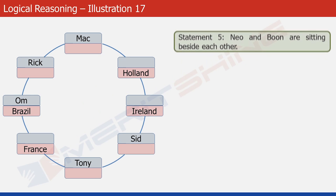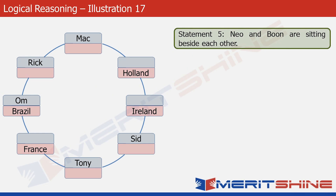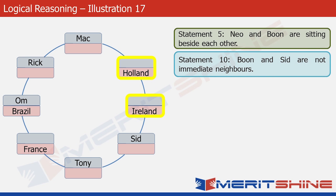Looking at statement 5: Neo and Boone are sitting beside each other. In the current structure there is just one pair of adjacent empty cells where they can be placed, giving two sub-possibilities for their order. Statement 10 says Boone and Sid are not immediate neighbours. Since the person from Ireland is an immediate neighbour of Sid, Boone cannot be from Ireland. Therefore Neo must be from Ireland and Boone from Holland, and we place them accordingly.